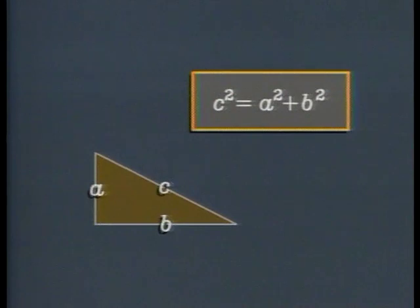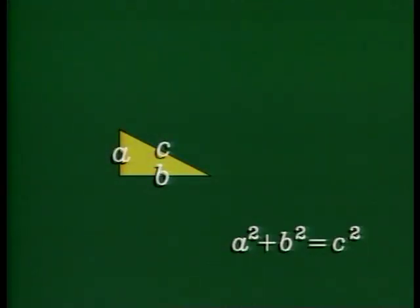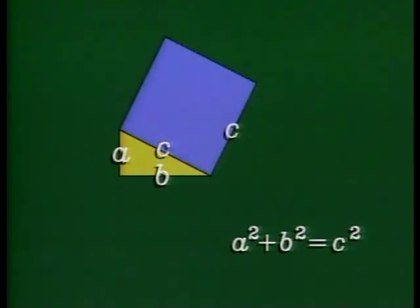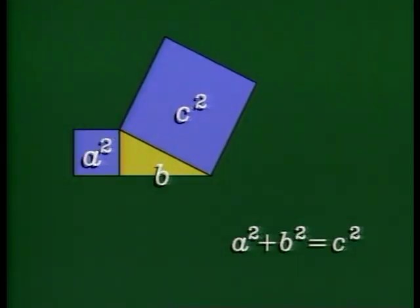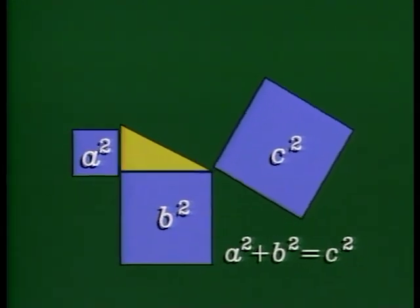The square of the hypotenuse is equal to the sum of the squares of the other two sides. This result, simple, elegant, and quite unexpected, is called the Pythagorean theorem. The algebraic formula has a simple geometric interpretation. Because we're talking about A squared and B squared and C squared, let's think of this in terms of squares. The area of the square on the hypotenuse is equal to the sum of the areas of the squares on the two legs. This is the geometric meaning of the algebraic formula.